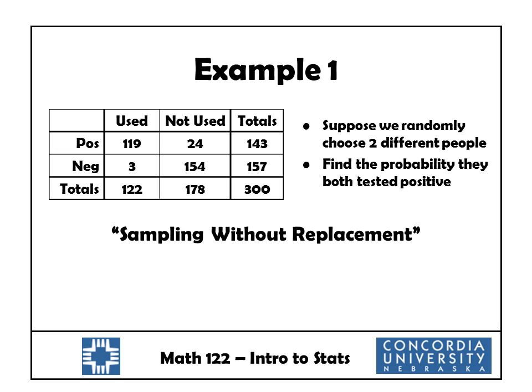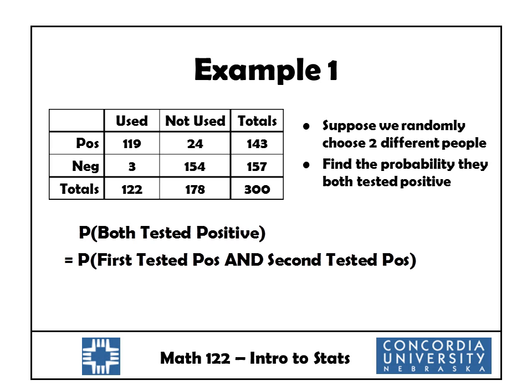Suppose we randomly choose two different people — that means we're going to choose one from the 300 and then a second from the remaining 299. We call this sampling without replacement, because we choose one from the 300, do not replace it, and then choose a second from the remaining 299. We want to find the probability that they both tested positive. The first step in a problem like this is to write down what we want to find in mathematical notation: the P of both tested positive.